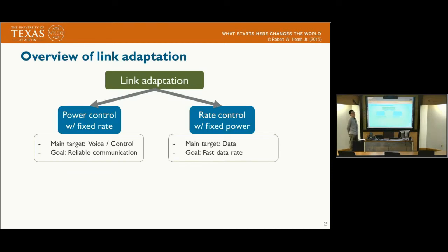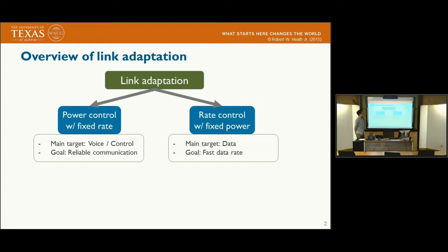I'd like to start with the overview of link adaptation. There are two types of link adaptation techniques. One is power control with a fixed rate, and the other one is rate control with fixed power. The main target of power control is voice or control communication, and its goal is to achieve reliable communication. The main target of rate control with fixed power is data communication, and its goal is to achieve a fast data rate.